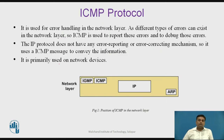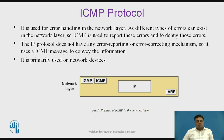ICMP protocol is used for error handling in the network layer, as different types of errors can exist in the network layer. ICMP protocol is used to report and debug these errors. The Internet Protocol does not have any error reporting or correcting mechanisms, so it uses ICMP messages to convey information. ICMP is primarily used on network devices and is located at the network layer.